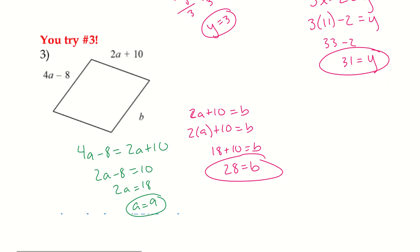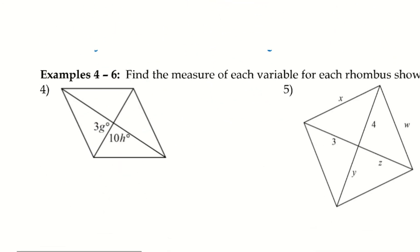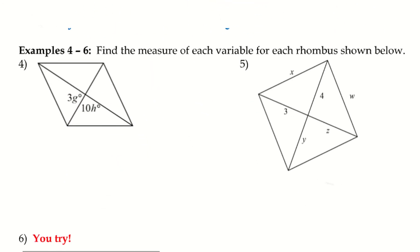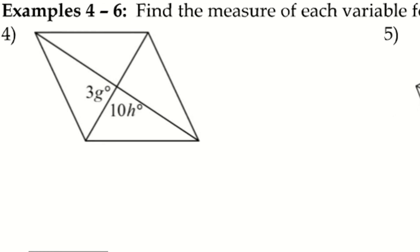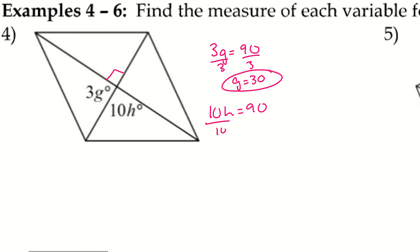For examples 4 through 6, we find the measure of each variable for each rhombus shown. This time we're dealing with the inside angles. The diagonals are perpendicular bisectors, which means they create 90-degree angles, so 3g = 90 and 10h = 90. Dividing gives g = 30 and h = 9.